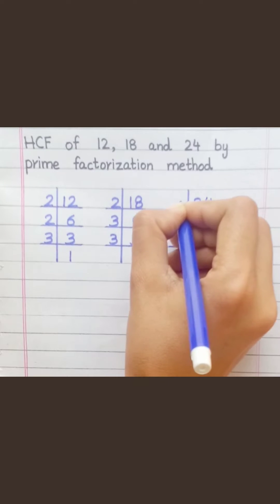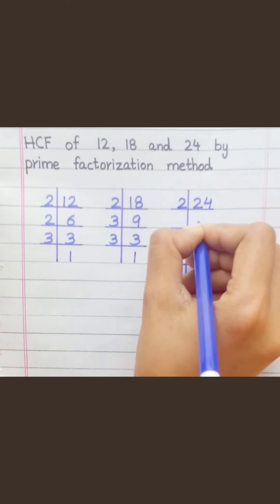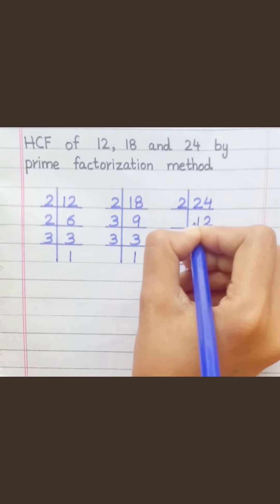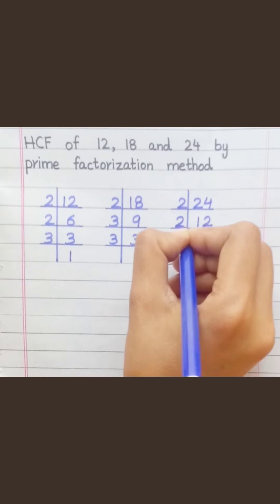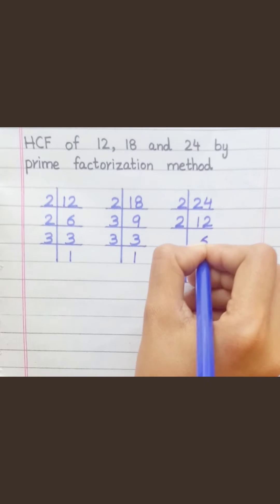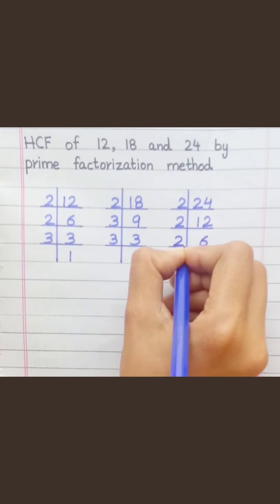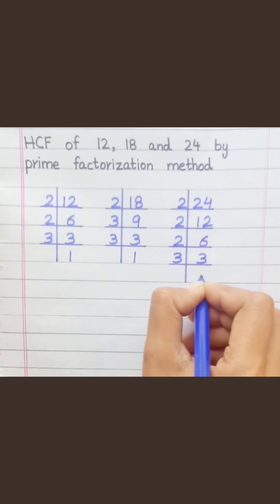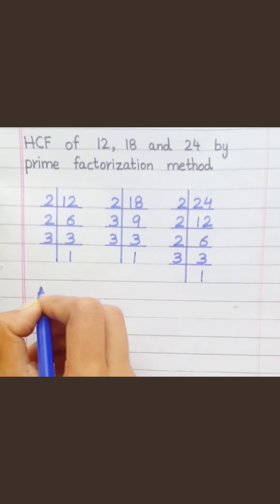24: 2, 12's are 24. 2, 6's are 12. 2, 3's are 6. 3, 1's are 3.